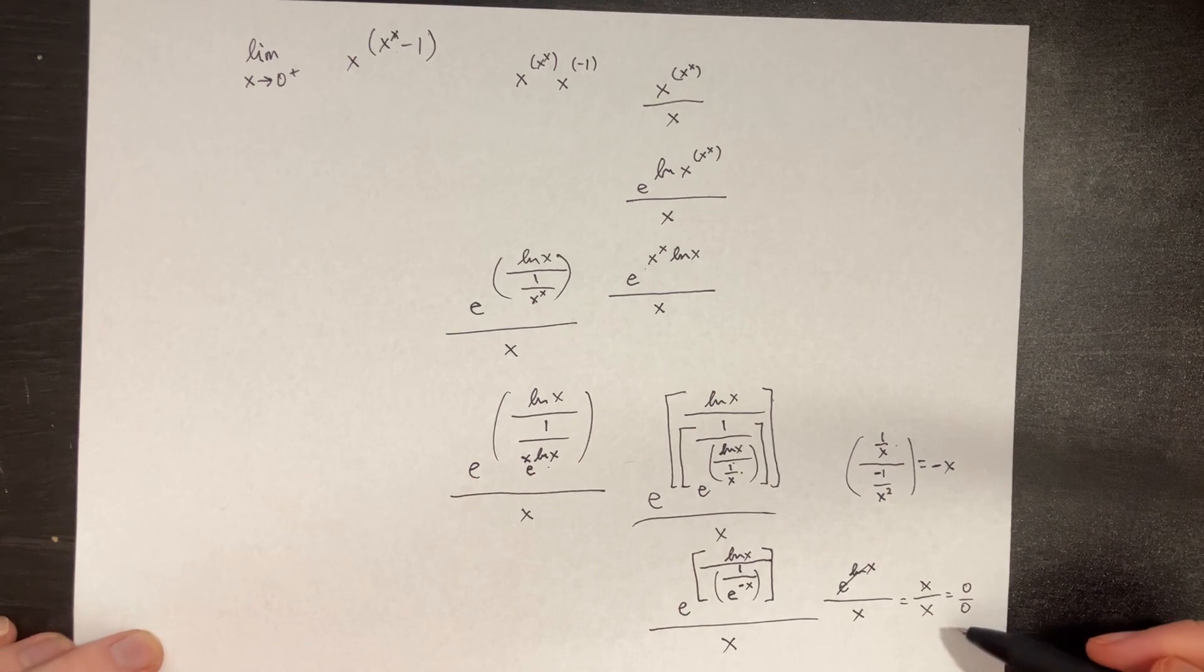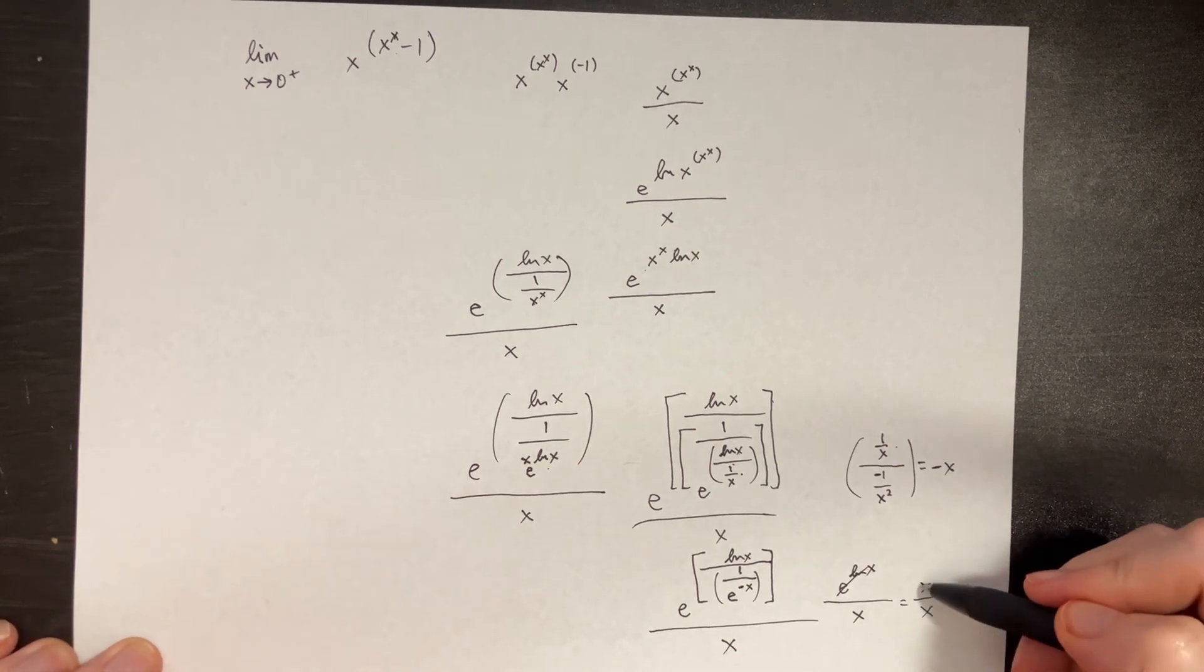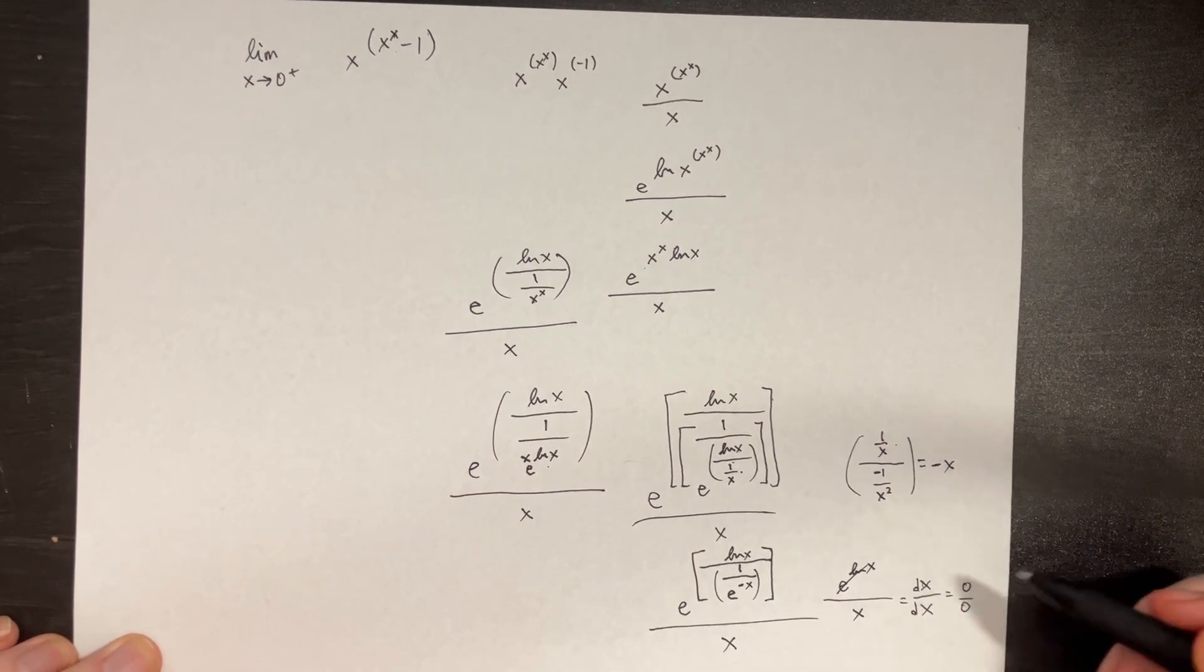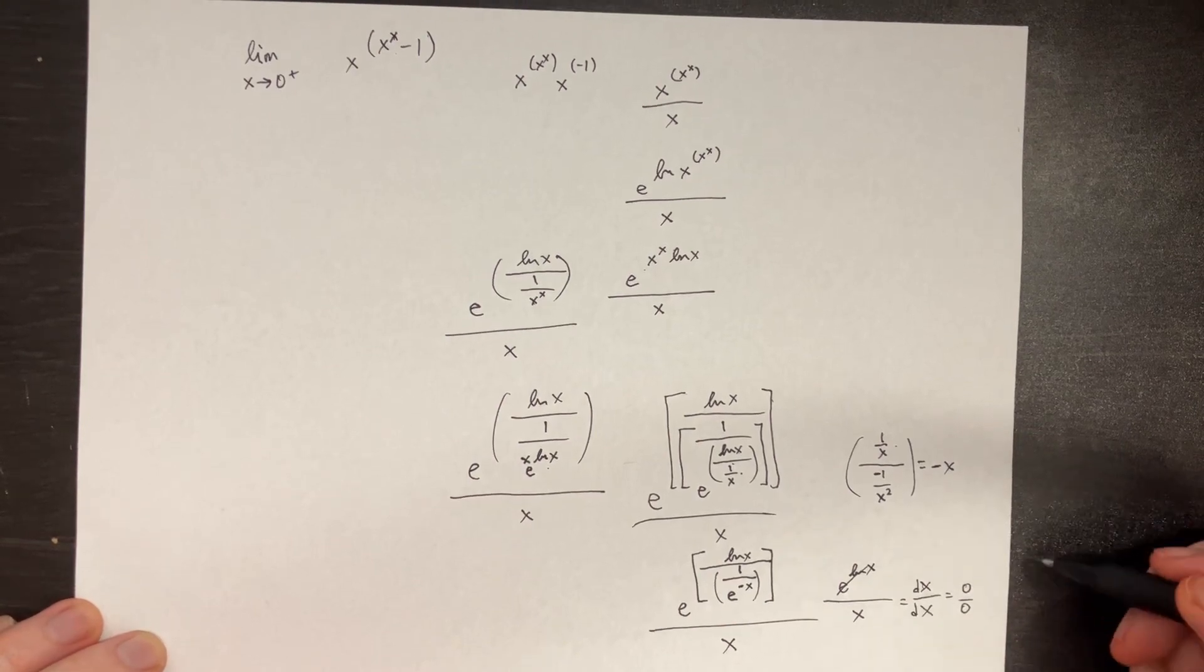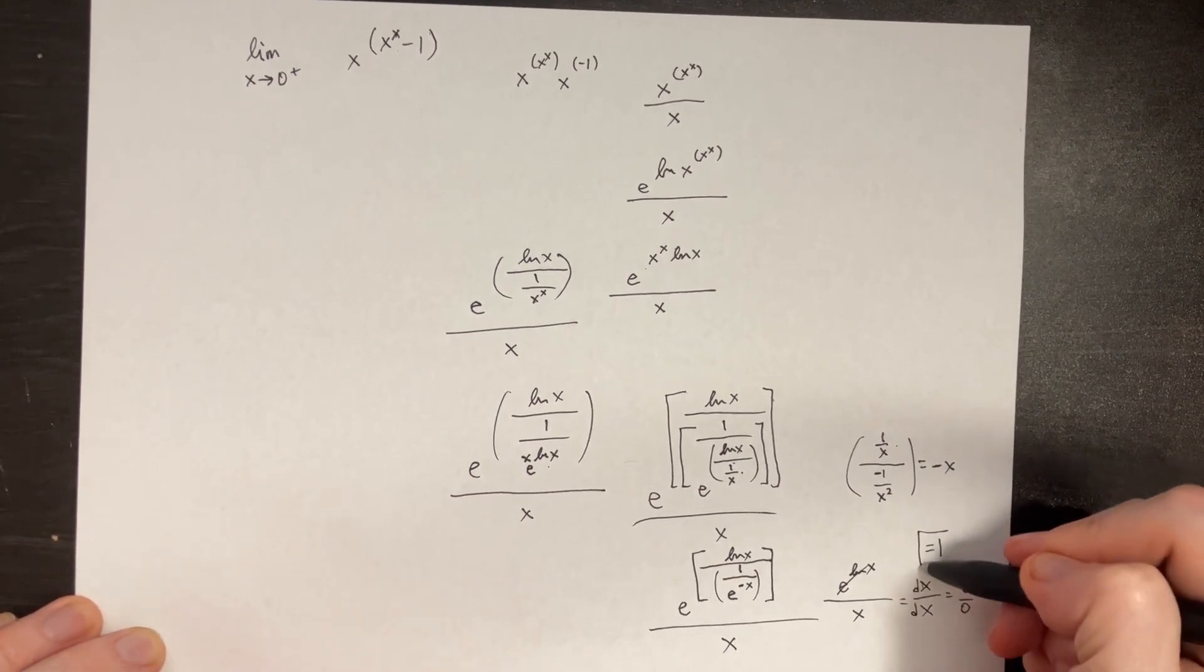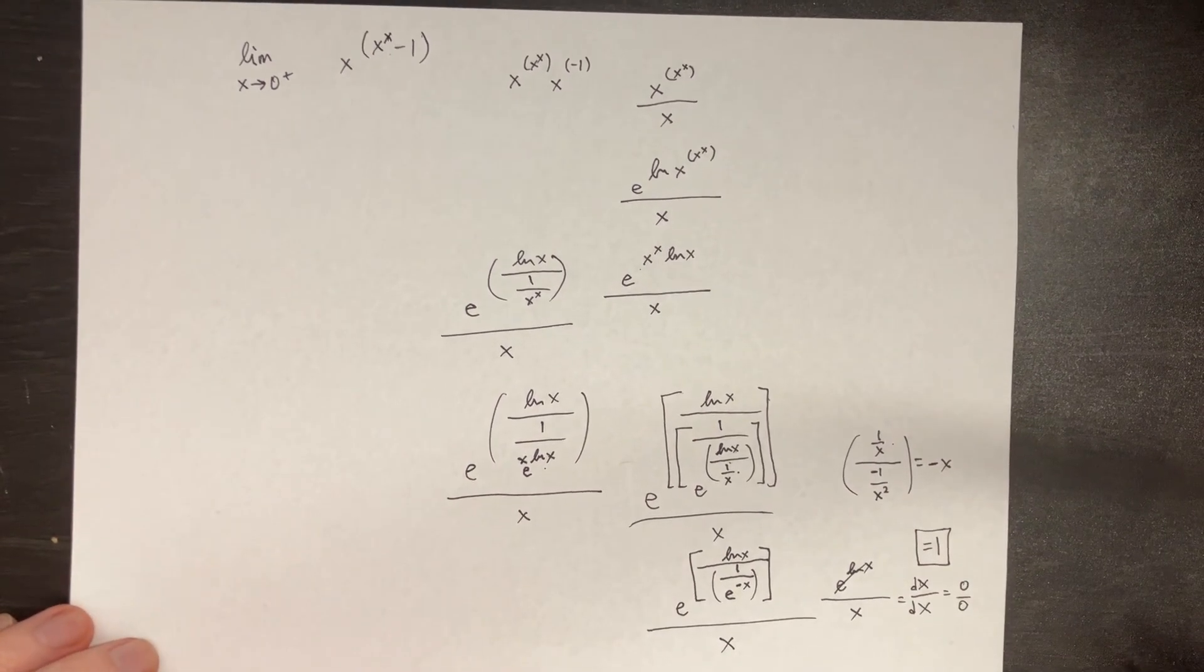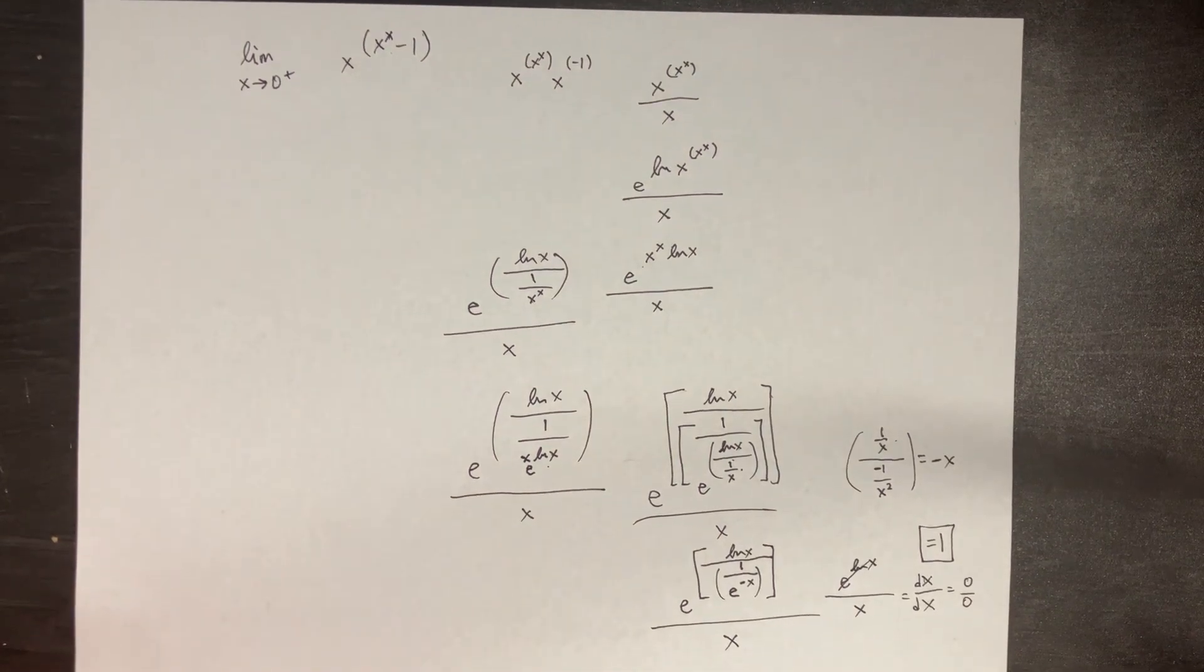So now we can take the L'Hopital method, and we can essentially just say the derivative of x over the derivative of x, which is just going to be equal to 1. And so it turns out that we get our answer at this point here.